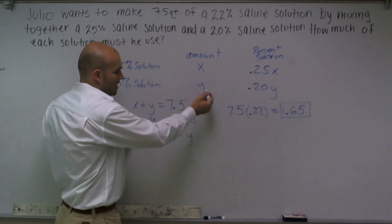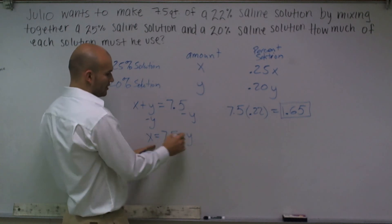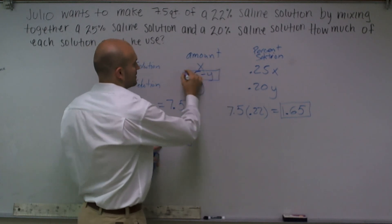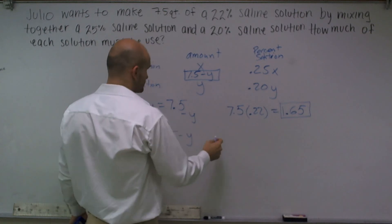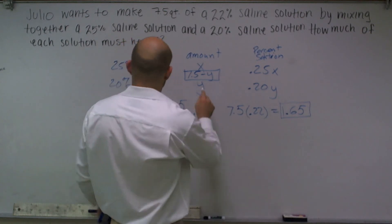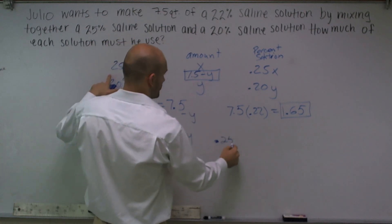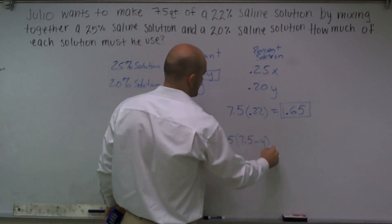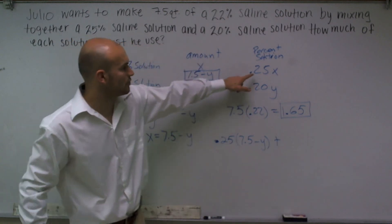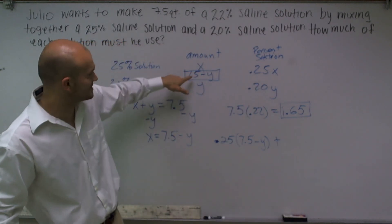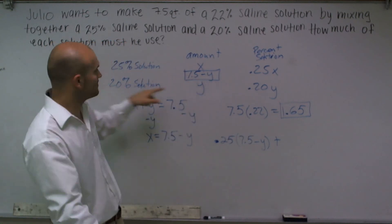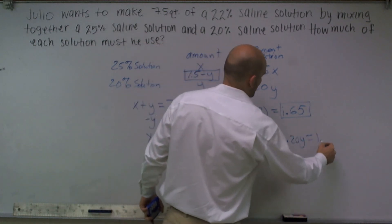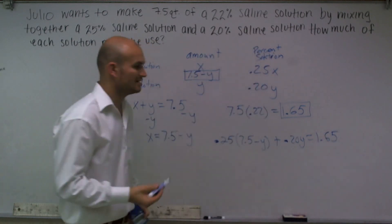Instead of writing x and y, I now have solved x equals 7.5 minus y, so I'm going to use that instead. So what I can say is 25% solution, .25, and now instead of times x, I'm going to multiply it times 7.5 minus y. So I have 25% of my x solution, which I rewrote as 7.5 minus y, plus my 20% solution, which I rewrite as .20y equals 1.65.